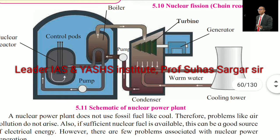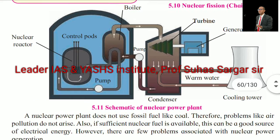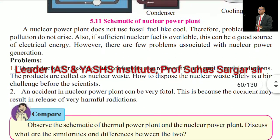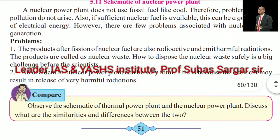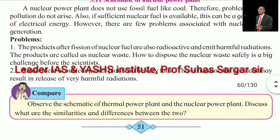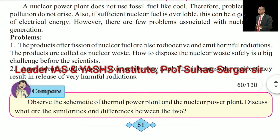See the diagram of the schematic of the nuclear power plant. A nuclear power plant does not use fossil fuel like coal. Therefore, problems like air pollution do not arise. Also, if sufficient nuclear fuel is available, it can be a good source of electrical energy.